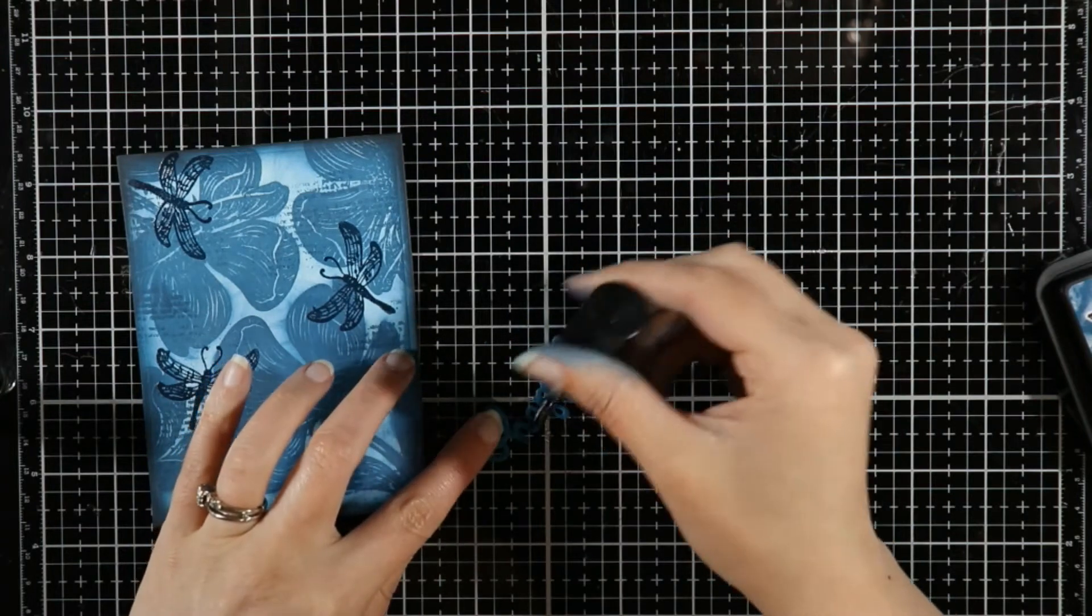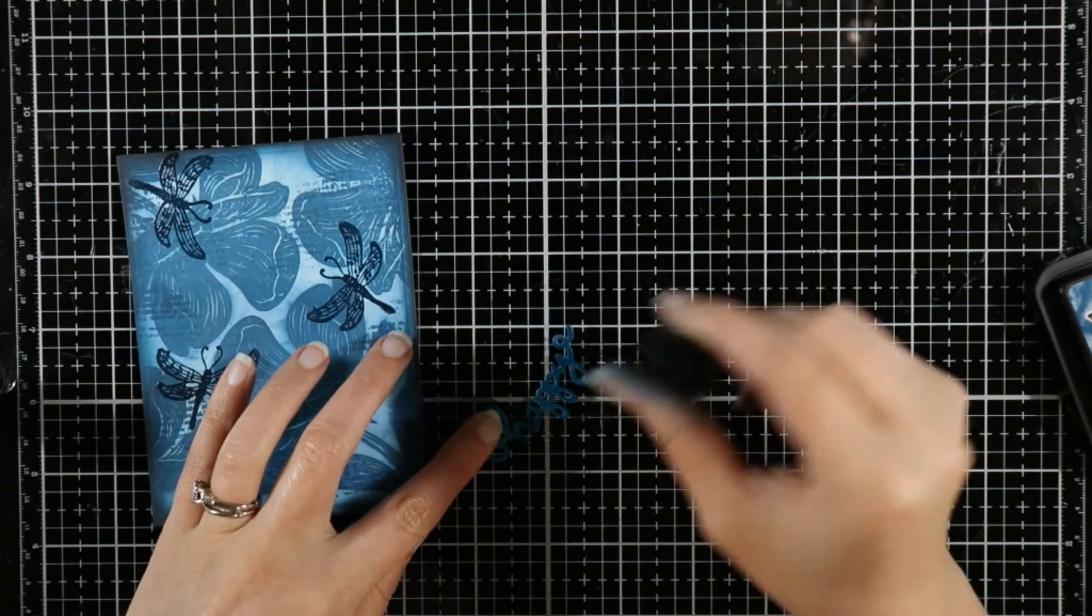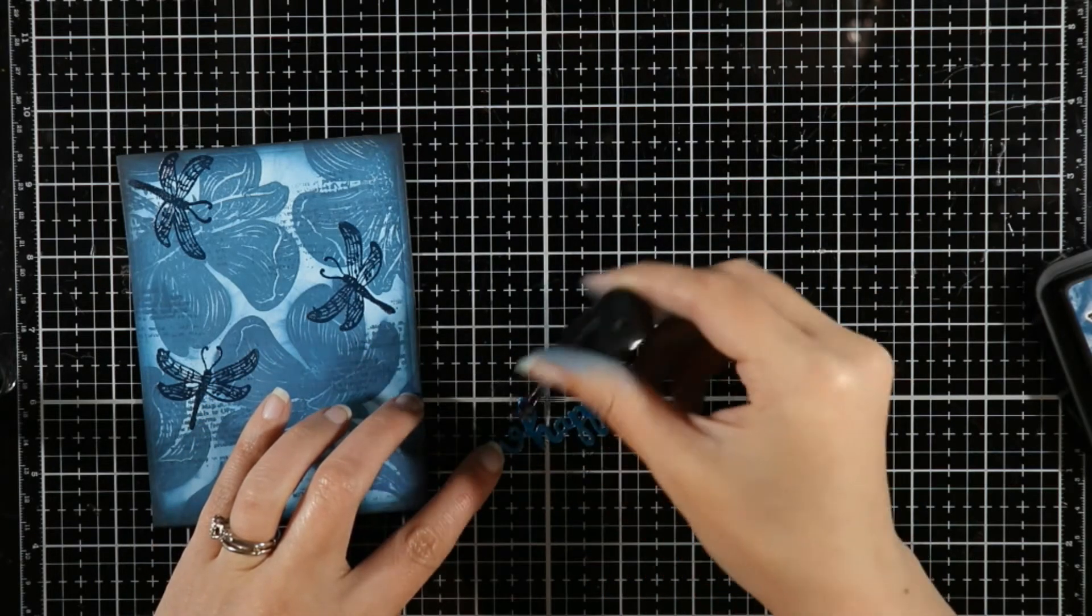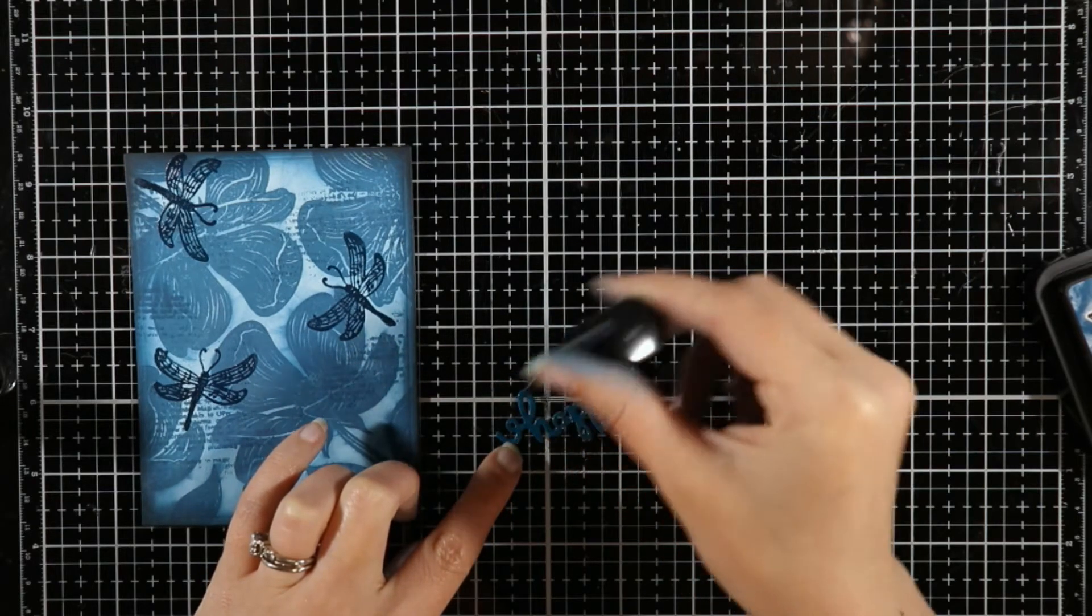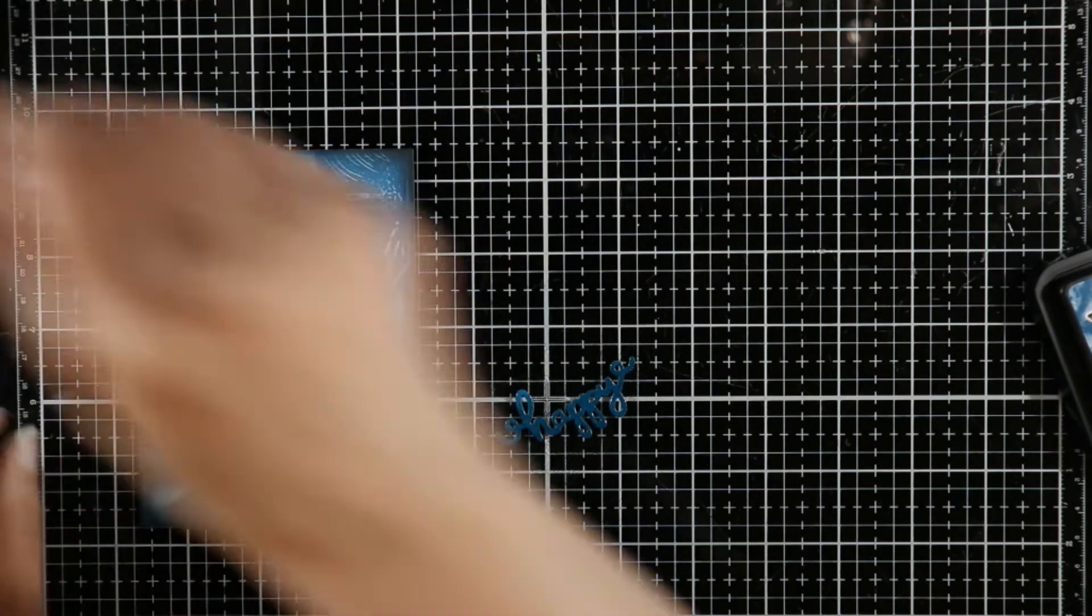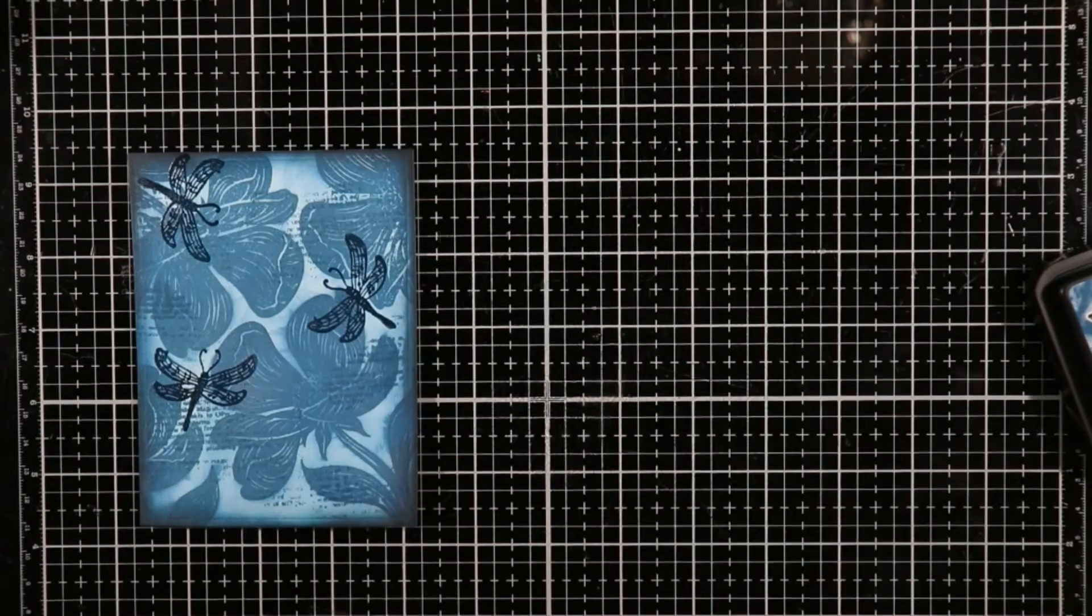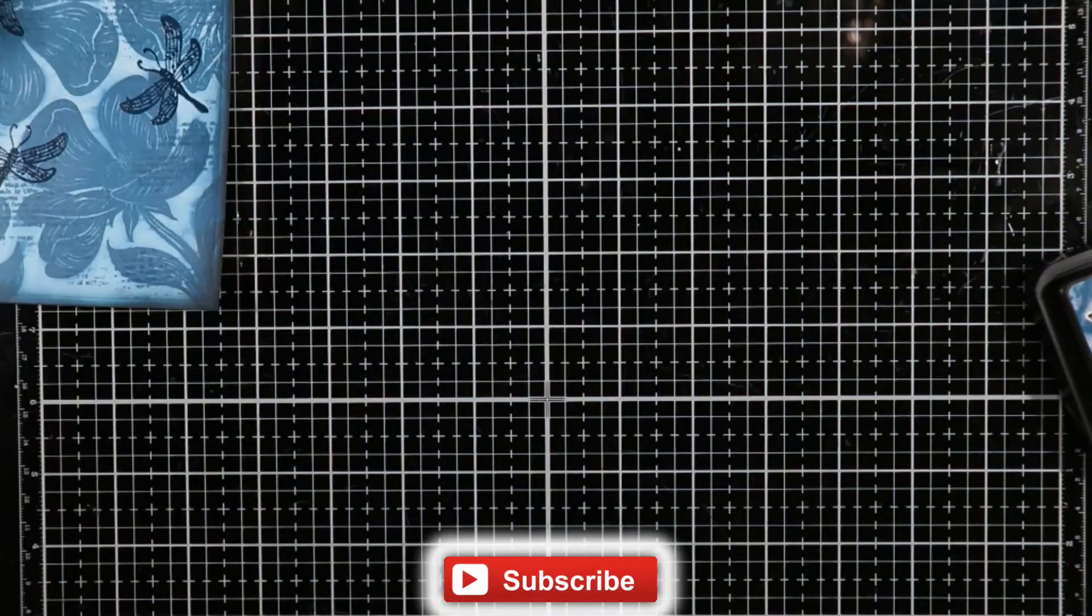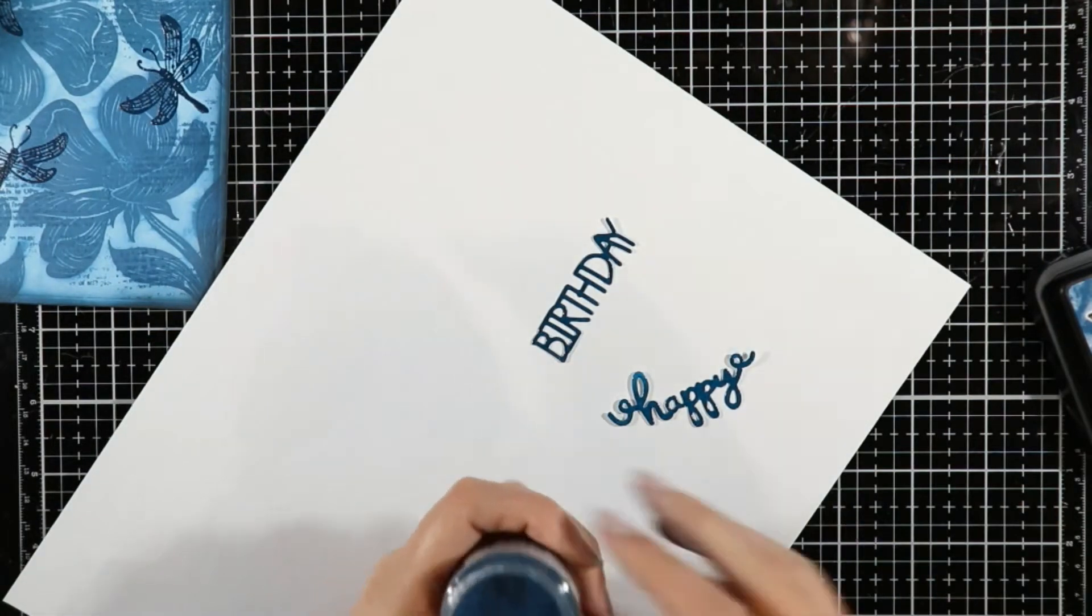There's a couple different companies that have this. I believe Ranger has one, or maybe it's Tim Holtz's brand. Wow has one. There's a couple different companies that have one. It's an embossing sticky ink, clear sticky ink. So I just covered that on there, and then I'm just wiping up the mess here on my desk. Then I'm just going to pour the embossing glaze over the top here on a scrap piece of paper.